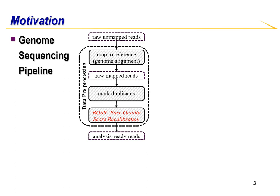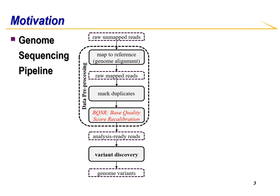After recalibration, the reads are ready for variant discovery. This is where a known sequence is compared to an unknown sequence. GATK handles steps from mark duplicates to variant discovery.